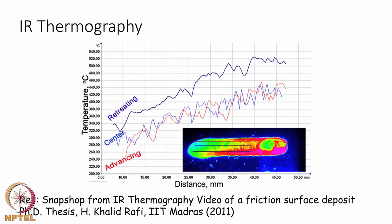Thermography using IR cameras is an expensive way of doing measurements but provides a lot of information in just one single run. This schematic plot shows a snapshot from IR thermography done on a friction surface deposit — a weld overlay technique — from the PhD thesis of Dr. Khalid Rafi from IIT Madras (2011).